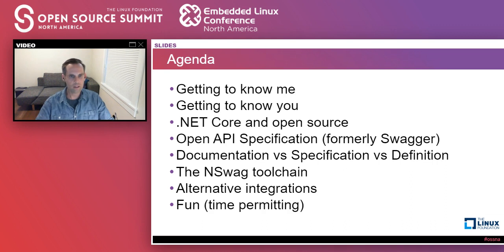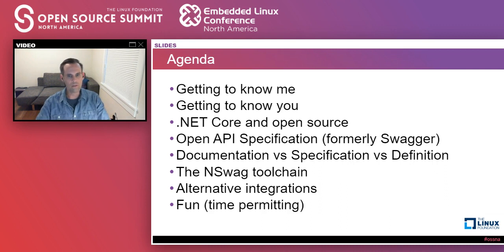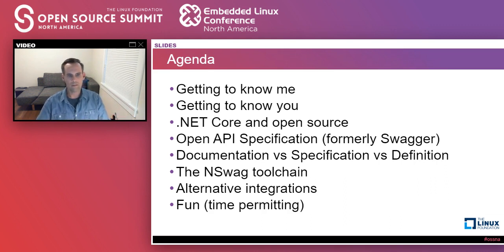Going back to the agenda: we're going to get to know a little bit about me, I'd like to get to know about you, and then we're going to talk about OpenAPI specification, .NET Core and open source, the difference between documentation, specification, and definition. We'll take a look at the NSwag tool chain, which is specific to .NET, but we're also going to look at alternative integrations for your favorite language and favorite framework. So if you're Scala ride-or-die, stick around — this is not just .NET, we're talking about concepts here.